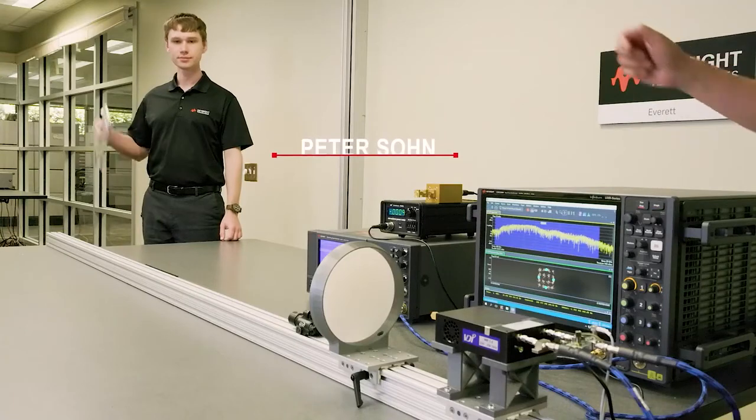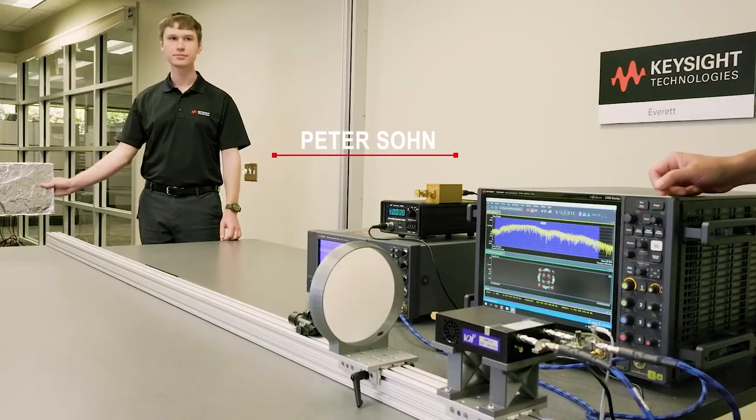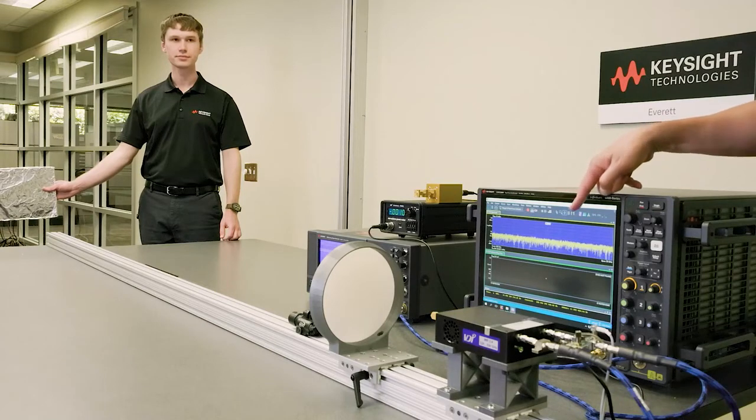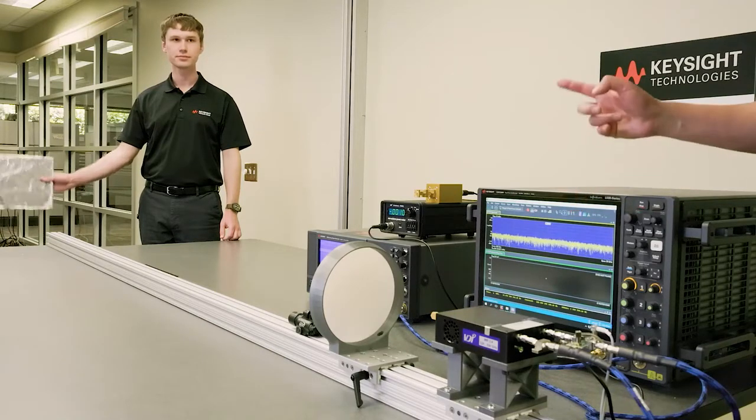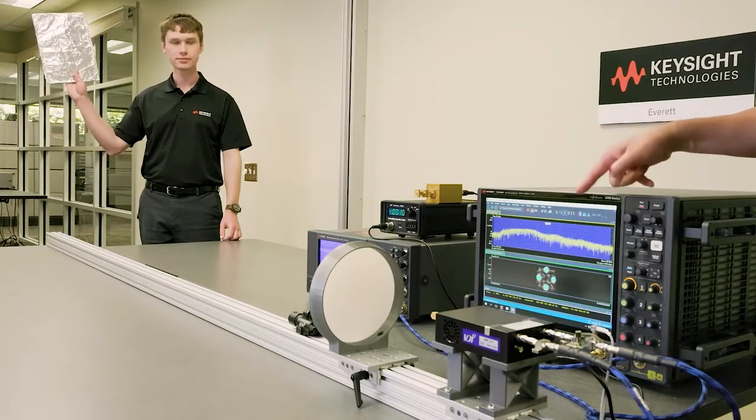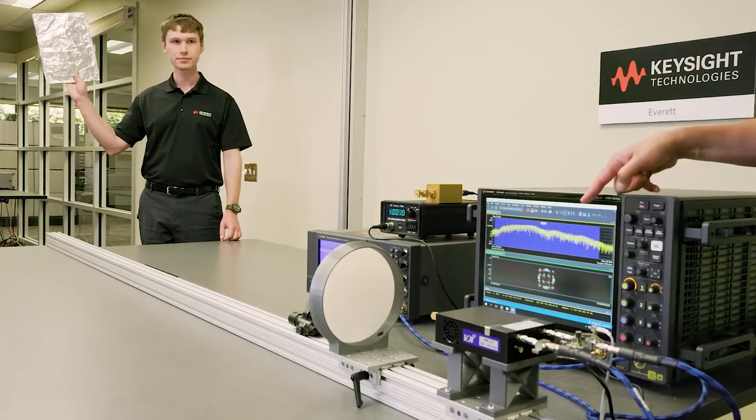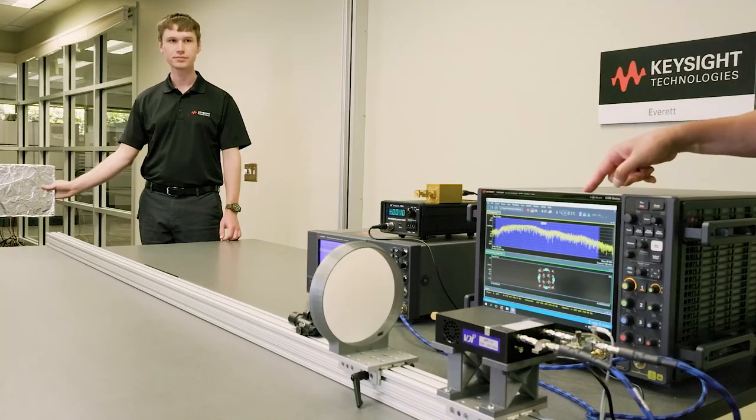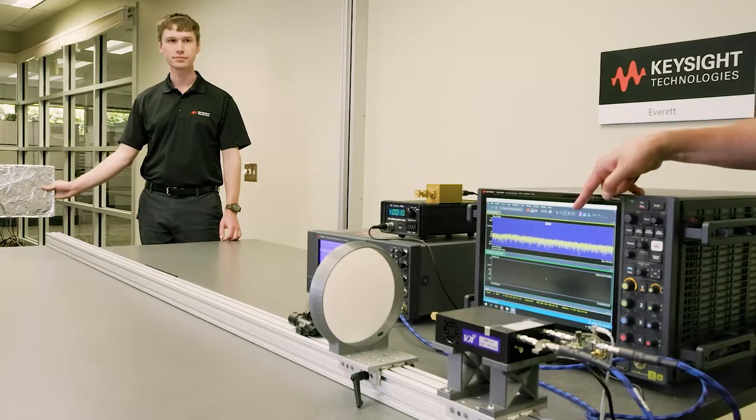Now to show this is a live demo, I'd like to introduce my colleague, Peter Sohn. And I'm going to ask Peter to insert a reflector into the beam. We can see that when Peter does that, the spectrum has disappeared as well as the constellation. Go ahead and remove it, Peter. And now the spectrum has reappeared as well as the constellation. And let's just try that one more time. And again, the spectrum has disappeared as well as the constellation.